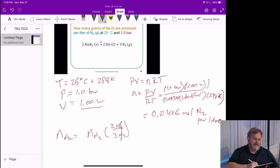We find that the number of moles of sodium is 2 thirds the number of moles of nitrogen, which is going to be 0.0269 moles.